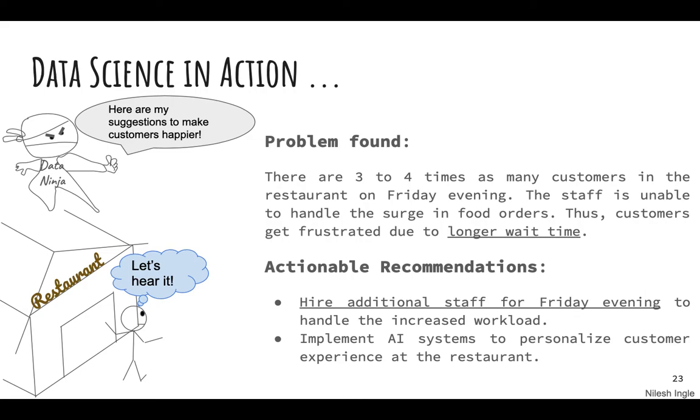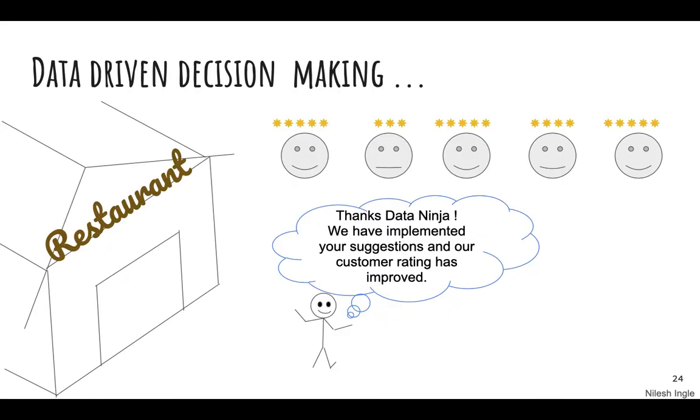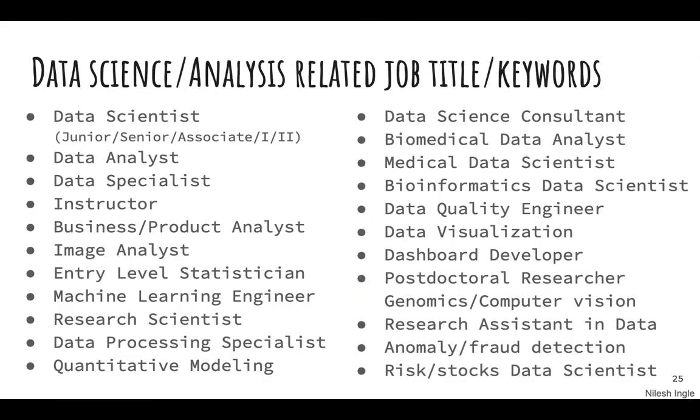Now the recommendations would be to hire additional staff for Friday evening so that the process would be efficient - ordering, preparing food, and delivering it to the customer tables. Additionally, if the restaurant owner is interested, they can also invest in AI systems to personalize customer experience as we saw earlier with the menu robot. That was it. So I hope you enjoyed that example. Now our business owner is happy and we can see the ratings are up.